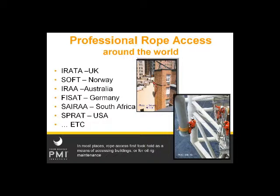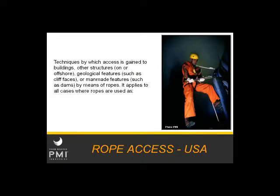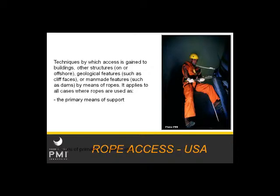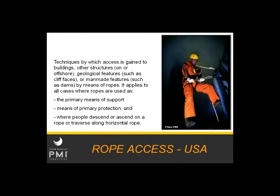Because of that, our processes, concepts, thoughts, and techniques have developed a little bit differently. In the United States, we consider rope access to be any technique by which access is gained to buildings, structures, or geological features by means of ropes. We apply it to pretty much all cases where ropes are used as the primary means of support, where ropes are used as primary protection in addition to support — so we're talking two ropes — and where people descend, ascend on a rope, or traverse along a horizontal rope.